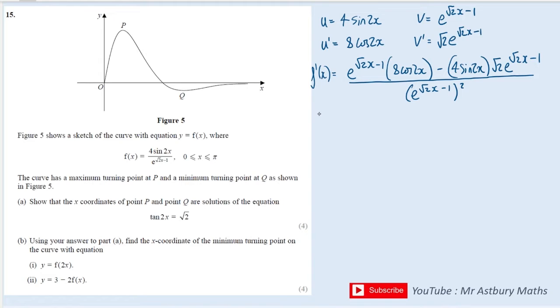And we want the derivative to equal 0 to find the turning points. And in order for us to have a fraction equal to 0, we only need the numerator to equal 0. So I'm going to write the numerator out, but I'm going to factorise it at the same time. So what do they have in common? Well, they've got a factor of 4 here, so I can take a 4 out. They also both contain e to the root 2x minus 1, so I can take that out.